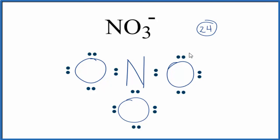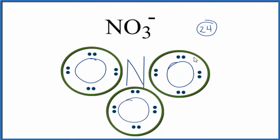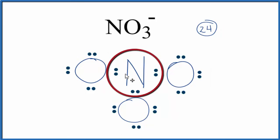So at this point, we've used 24 valence electrons. Each oxygen atom has eight, that's an octet. The problem is that this central nitrogen atom here only has two, four, six valence electrons. It needs eight to have an octet.